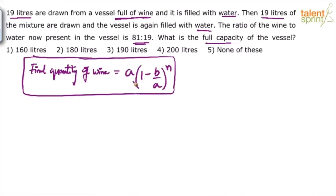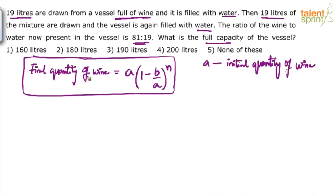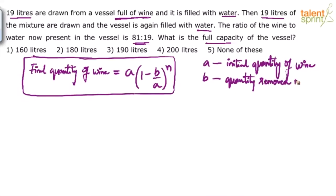Let me explain what a, b, and n are. 'a' is the initial quantity of wine — or milk or alcohol, anything. Initially we start with only one item, and we are trying to find the final quantity of that item after doing this operation a number of times. So final quantity equals a times (1 minus b over a) to the power of n, where 'a' is the initial quantity of wine, 'b' is the quantity removed in each step — here we are removing 19 liters, so b equals 19.